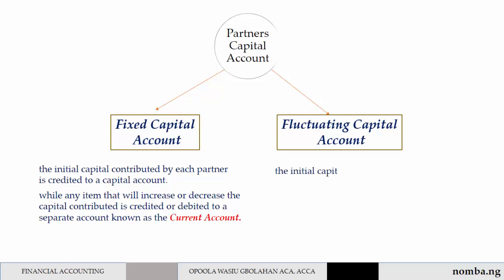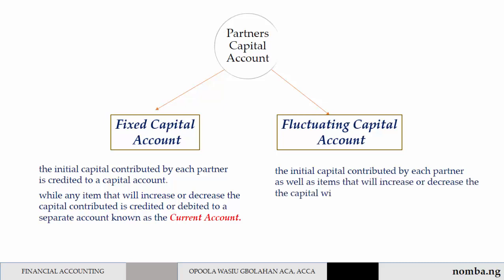For the fluctuating capital account, the initial capital contributed by each partner, as well as items that will increase or decrease the capital, will be debited or credited to the capital account. Under a fluctuating capital account, they maintain just a capital account that contains everything — the initial capital and all items that can increase or decrease the capital.